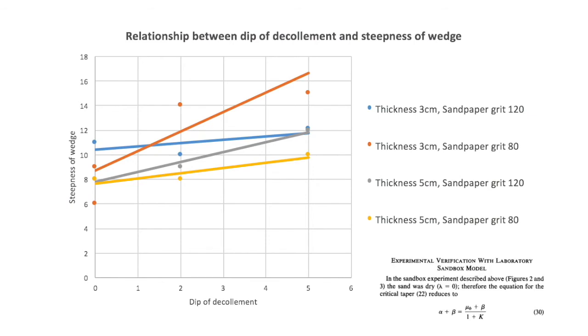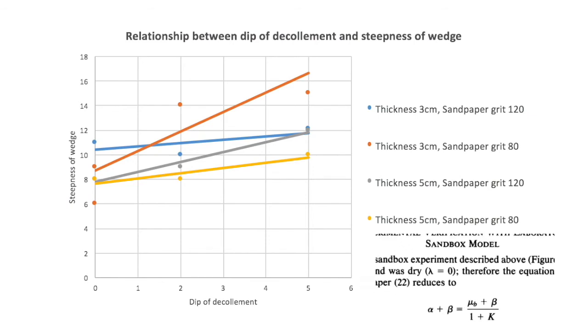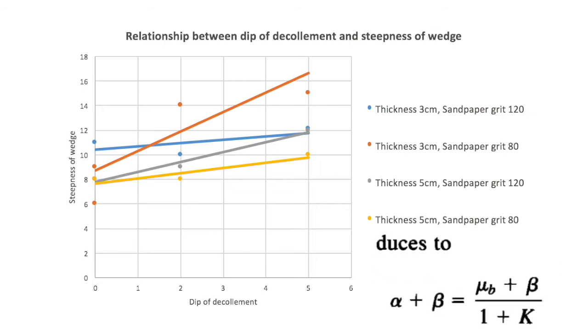This agrees with the equation for critical taper wedge mechanics for dry sand, in which the steepness of the wedge, alpha plus beta, increases as beta, the dip of the detachment increases.